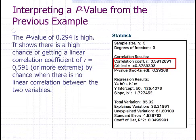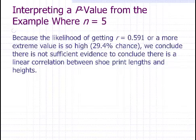So what this tells us is that we have a probability of getting that correlation coefficient of 0.591. Think about this as a percent, 29% of the time. Well, think about it. If you're going to be playing darts and you can hit the bullseye almost 30% of the time, it isn't going to take as much skill. It isn't going to happen as rarely. So there's not much evidence to support that there's a linear correlation between the shoe print length and the heights of individuals.